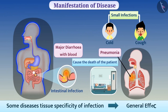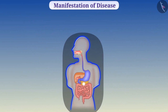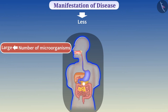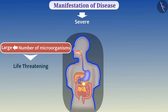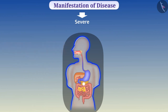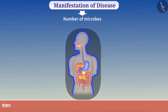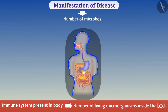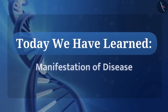We should keep in mind that when the number of microorganisms entering the body is less, the manifestation of disease will be less. If the number of microorganisms is large, the disease can be severe and life-threatening. Therefore, the severity of disease manifestation depends on the number of microbes in the body, and the immune system determines the number of living microorganisms inside the body. So today we have learned about manifestation of disease.